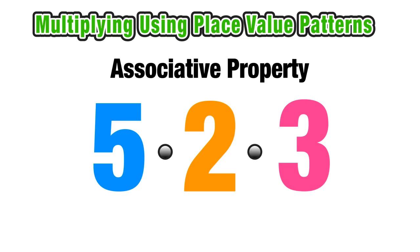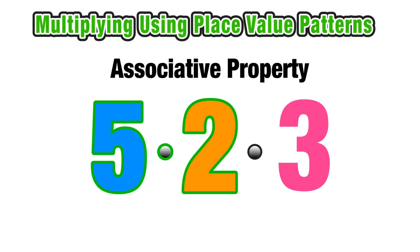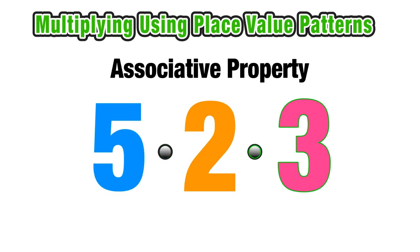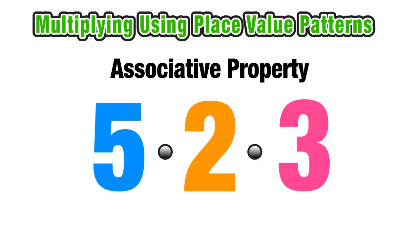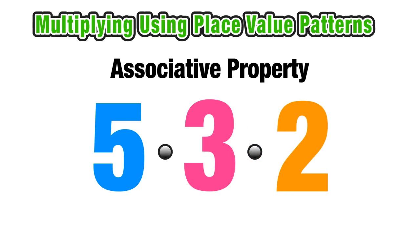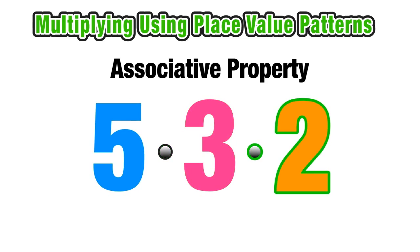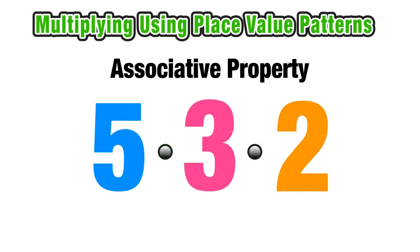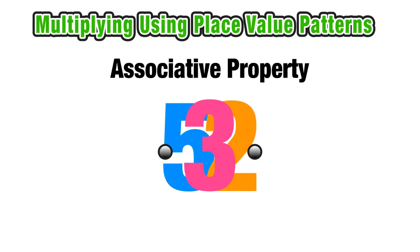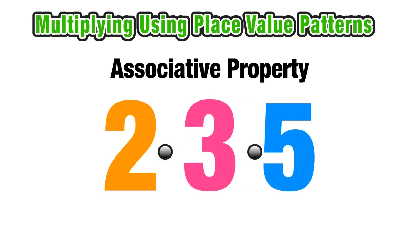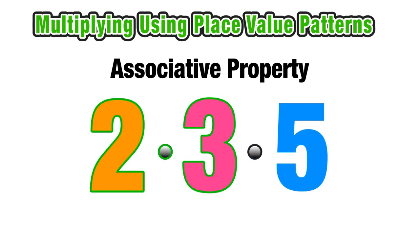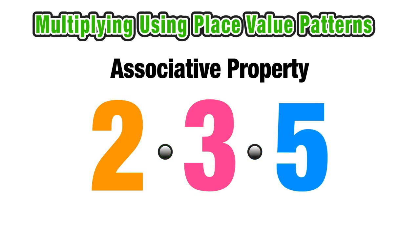In the current order, we'd start off by multiplying 5 times 2, which equals 10, and then multiplying that by 3 — and 10 times 3 is 30. Now if we change the order, we multiply 5 times 3 first, which is 15, and 15 times 2 also equals 30. And if we change the order again, we do 2 times 3 first, which is 6, and then 6 times 5 again equals 30.